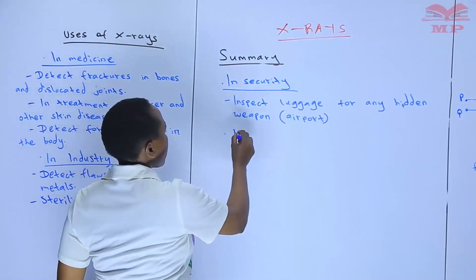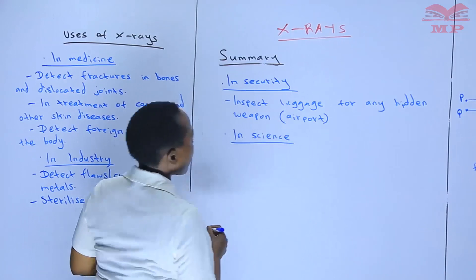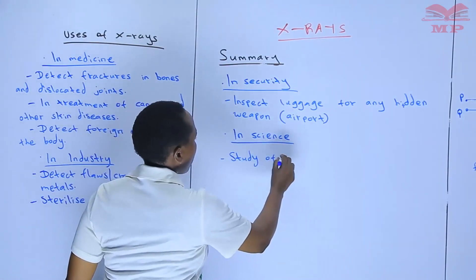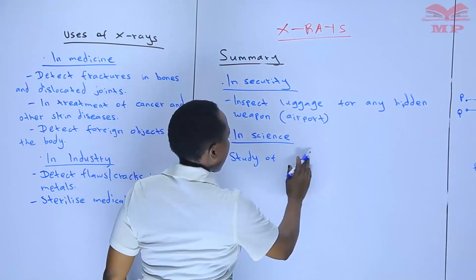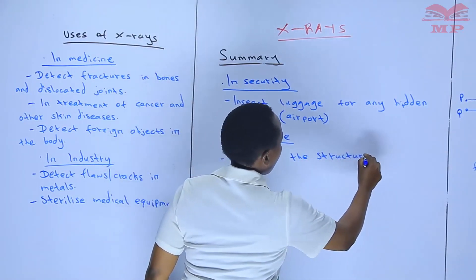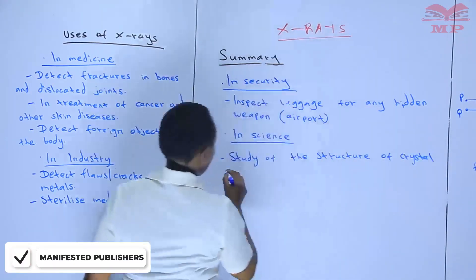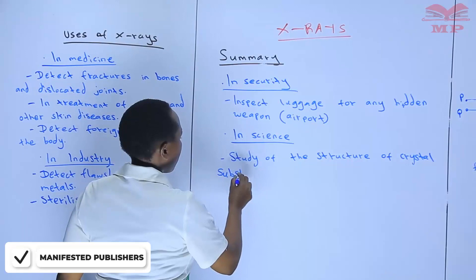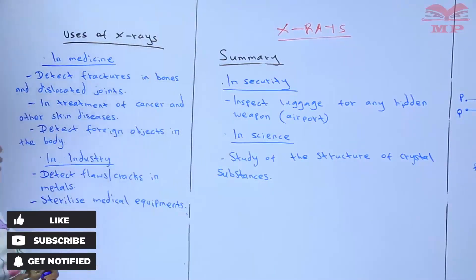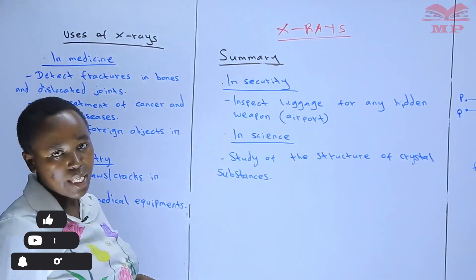Finally, in science, X-rays are used in crystallography, where they are used in the study of the structure of crystal substances.